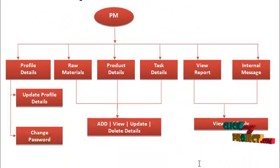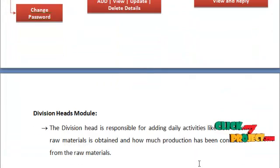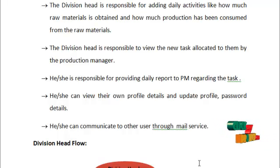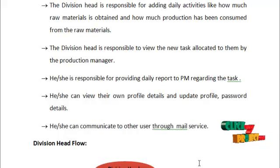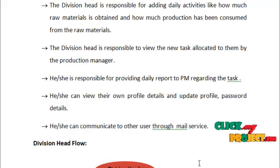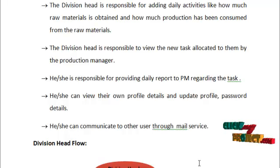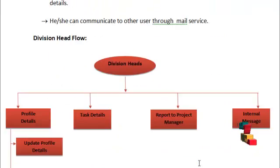The division head module is responsible for adding daily activities like how much raw material is obtained and how much production has been consumed from the raw material. The division head is responsible for viewing new tasks allocated by the production manager and providing daily reports to the production manager regarding the task. They can view and update their own profile details, change password routinely for security reasons, and communicate to other users through mail services. The data flow diagram for the division head is shown below.